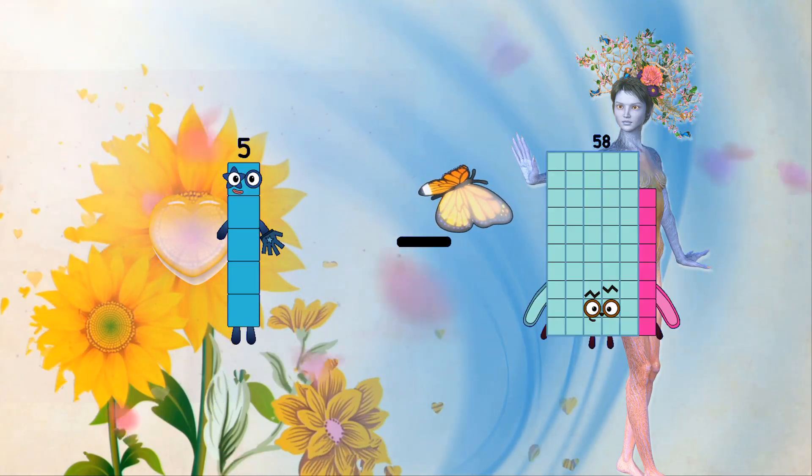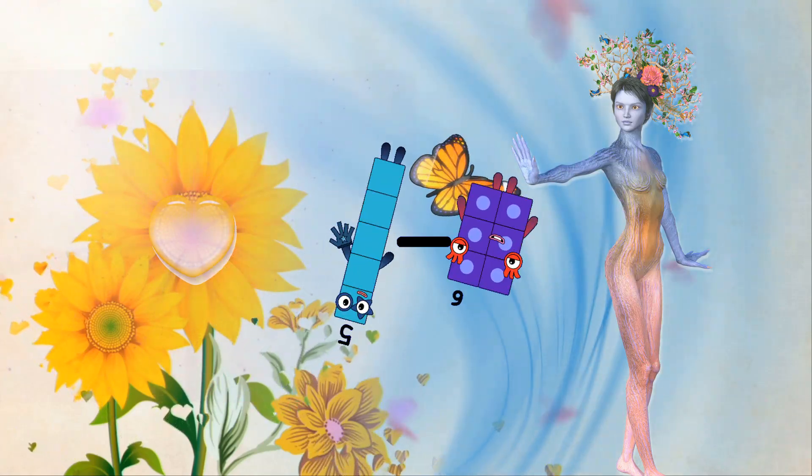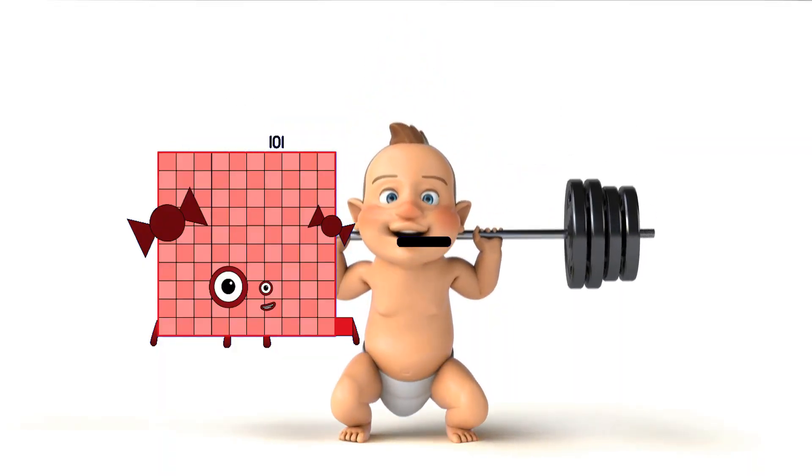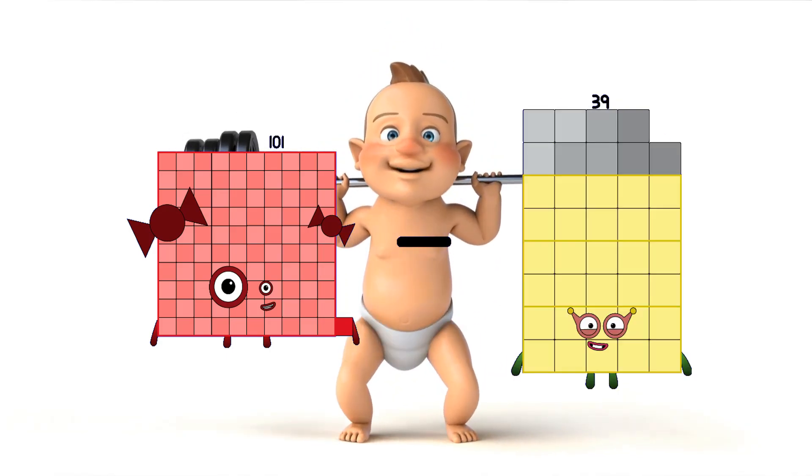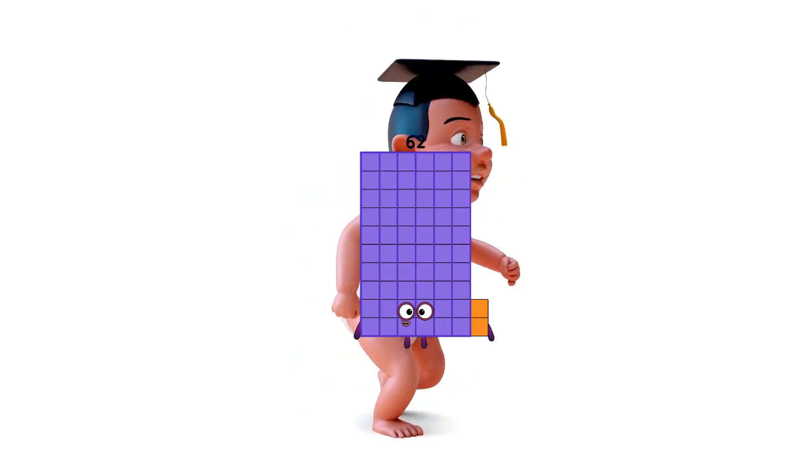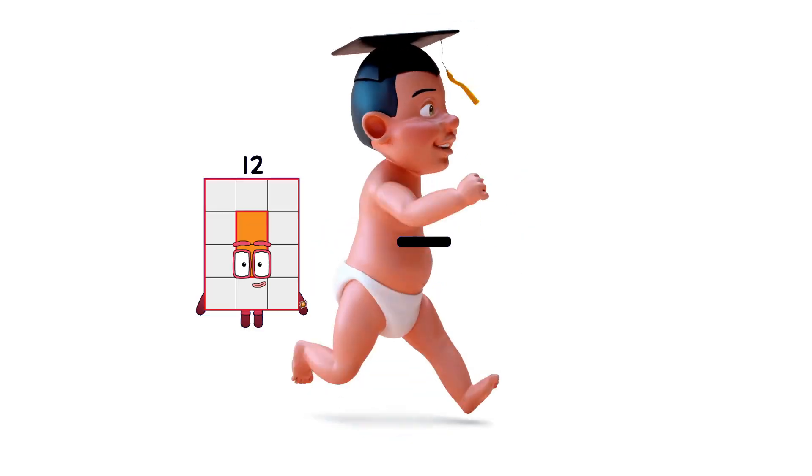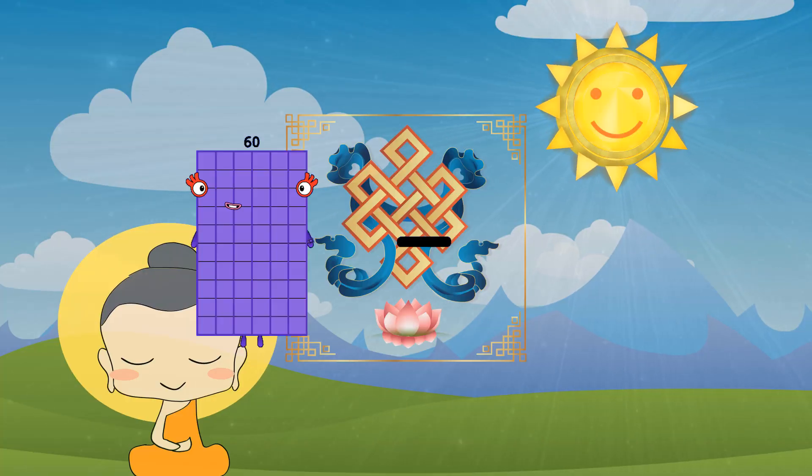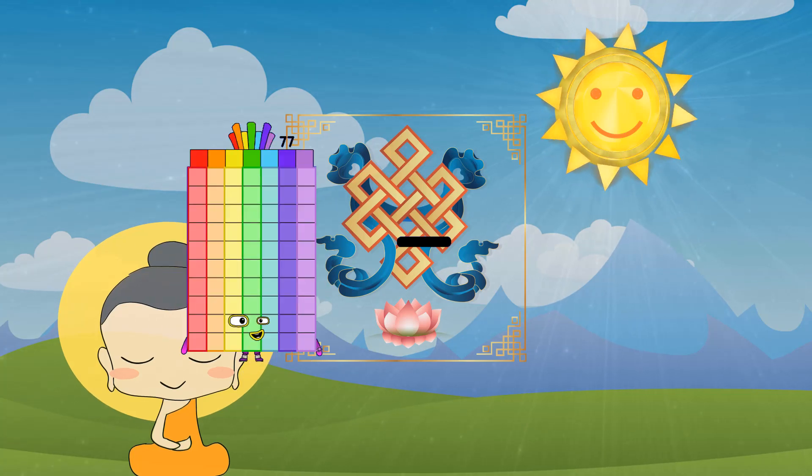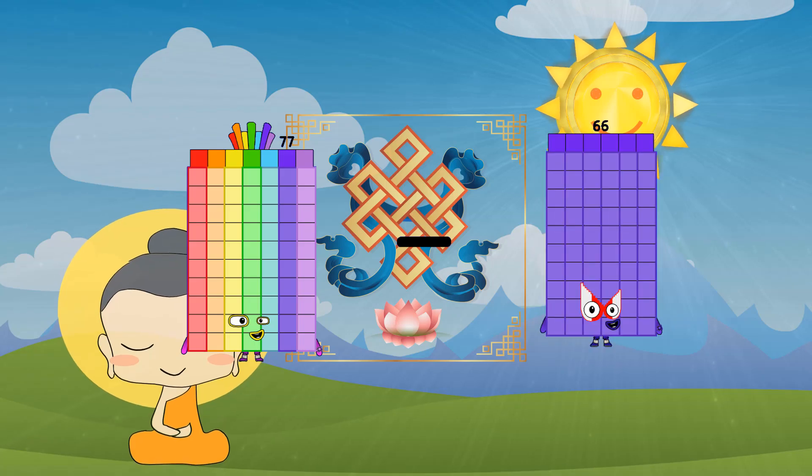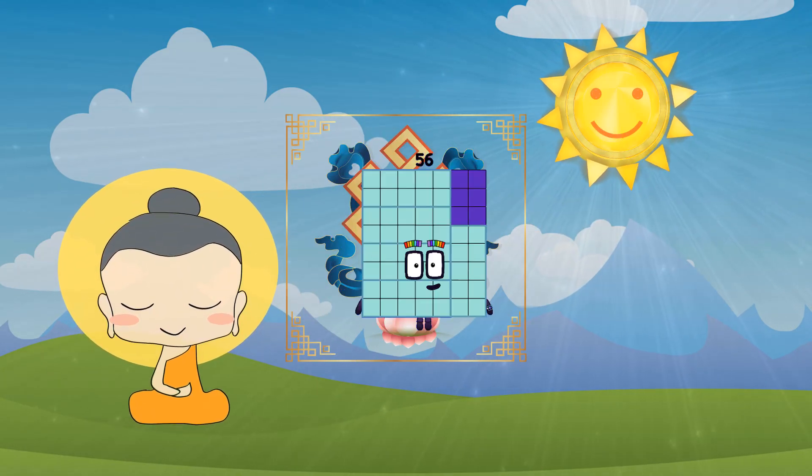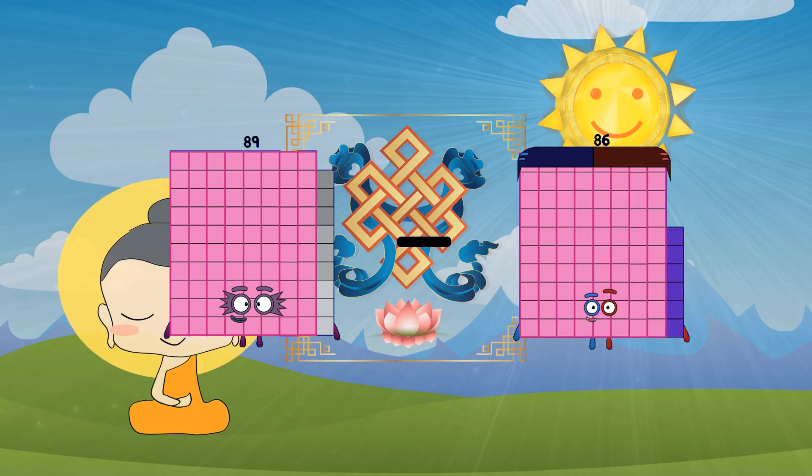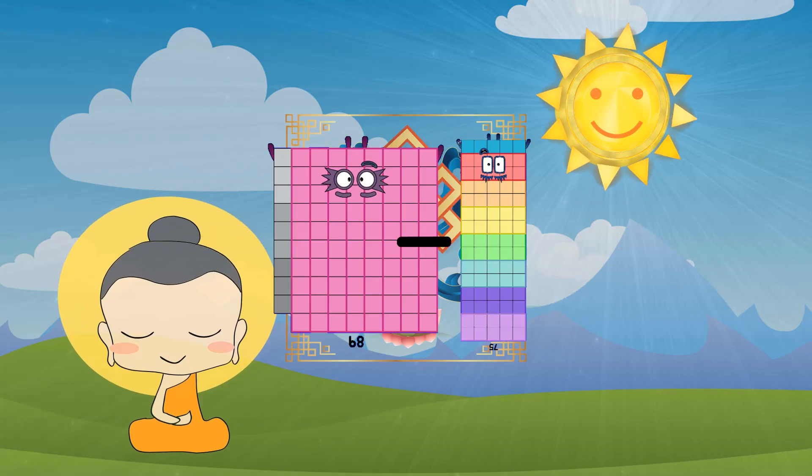5 minus 6 equals 214. 101 minus 39 equals 62. 12 minus 12 equals 0. 77 minus 21 equals 56. 89 minus 75 equals 14.